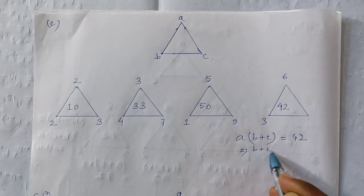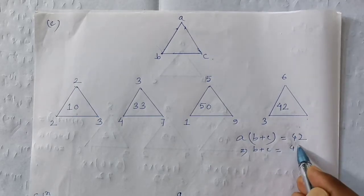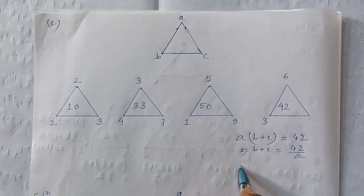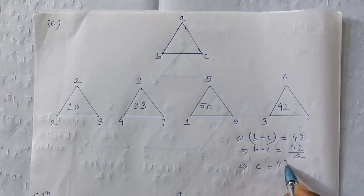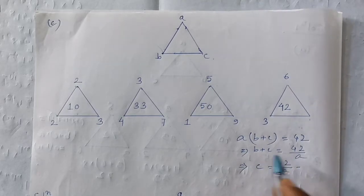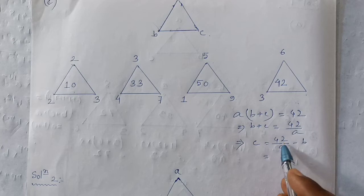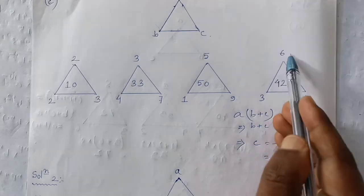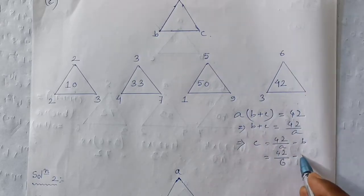A: B plus C. b plus c equal to 42 by a. This implies c equal to 42 by a minus b. c equal to 42 by b. Plus c equal to 42 by 42. 42 by 6 minus b: 14 plus 3, 3.